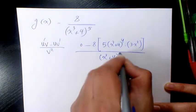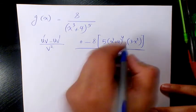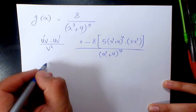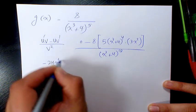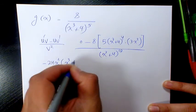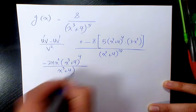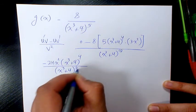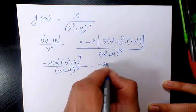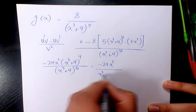Simplifying the numerator: negative 8 times 5 times 3 gives negative 120, so we have negative 120x² times (x³ + 4)⁴ divided by (x³ + 4)¹⁰. Canceling (x³ + 4)⁴ from numerator and denominator gives negative 24x² divided by (x³ + 4)⁶.